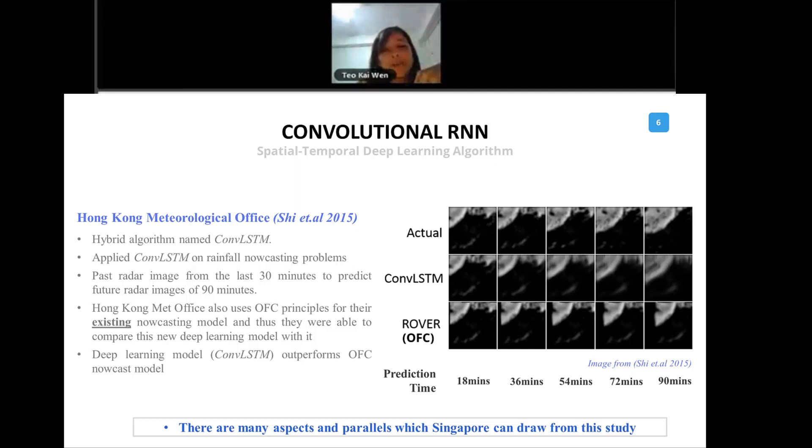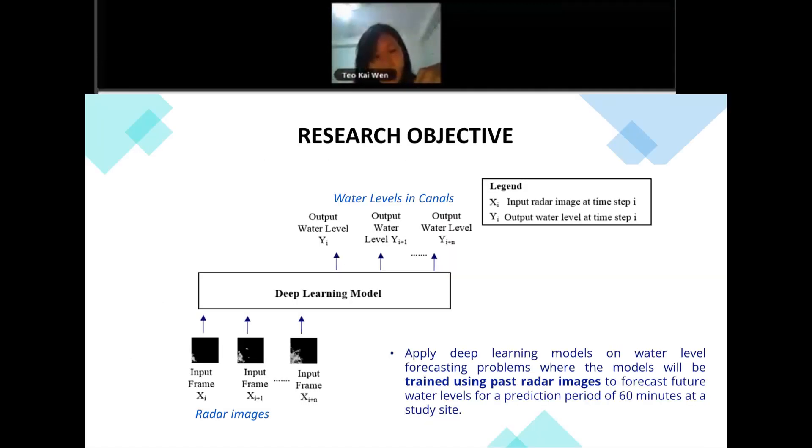There are actually many parallels which Singapore can draw from this study, and we wanted to test on this ConvLSTM algorithm for us. What we actually wanted to do is construct a deep learning model which takes in radar images of past 30 minutes and then predict water levels in the canals. This is essentially the whole objective of it.